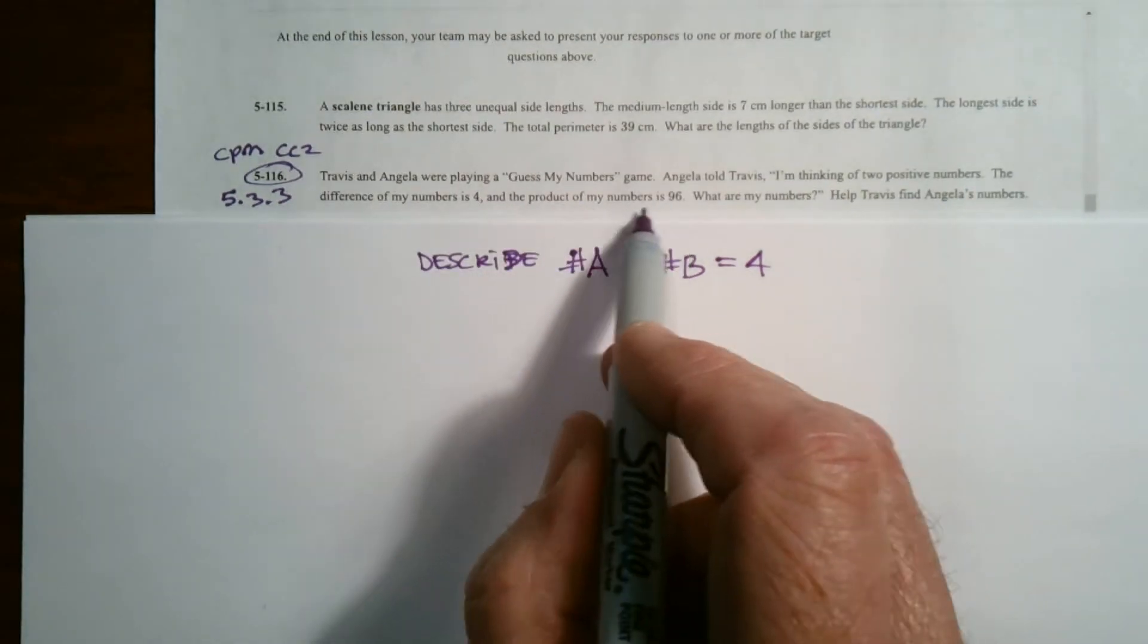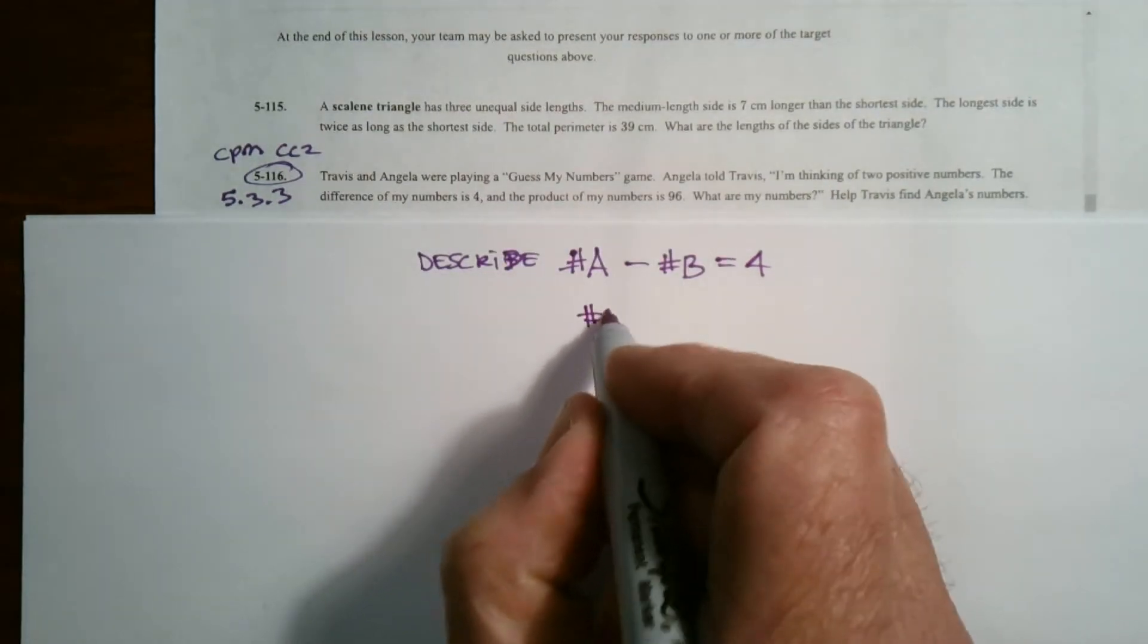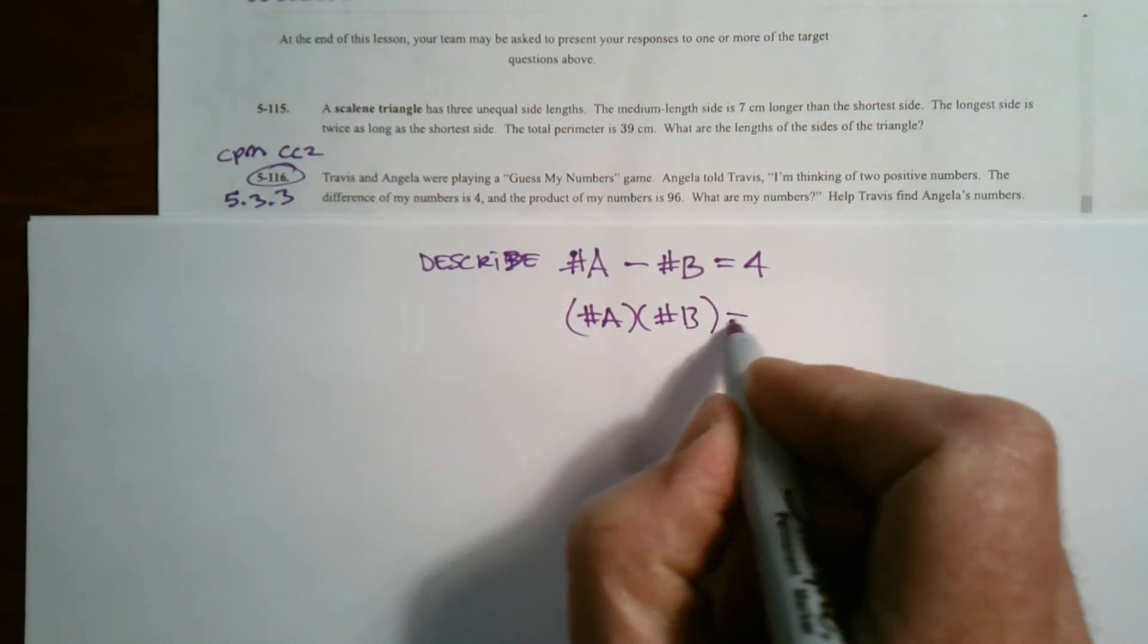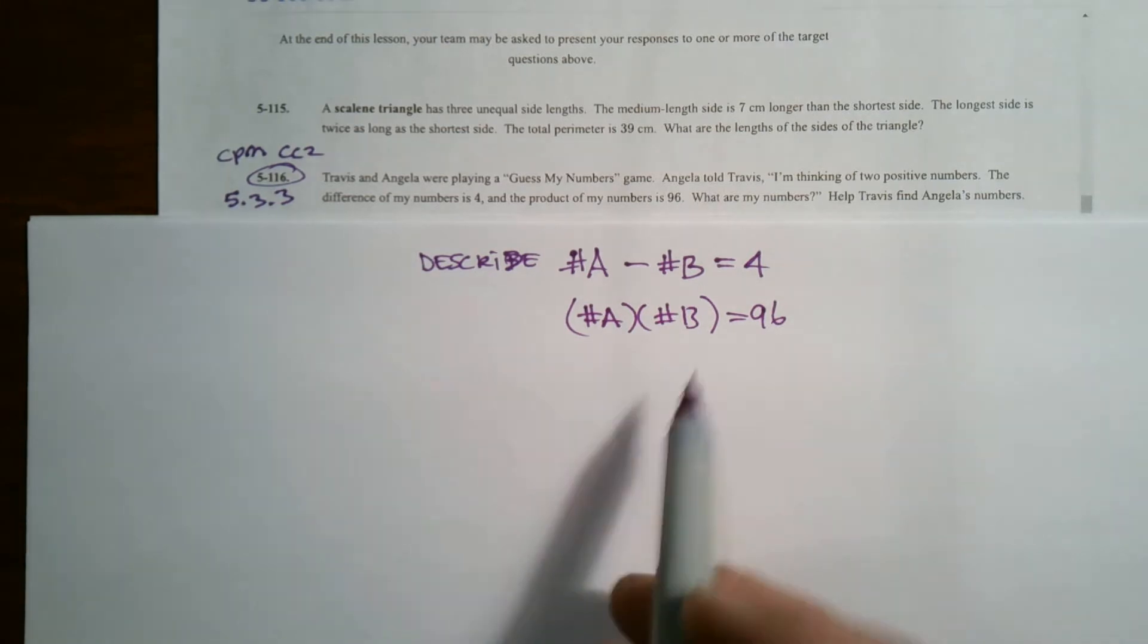The other one is it says the product of the numbers is 96. So that number A multiplied by that number B would be 96. So those are two really important pieces of information as we do this.